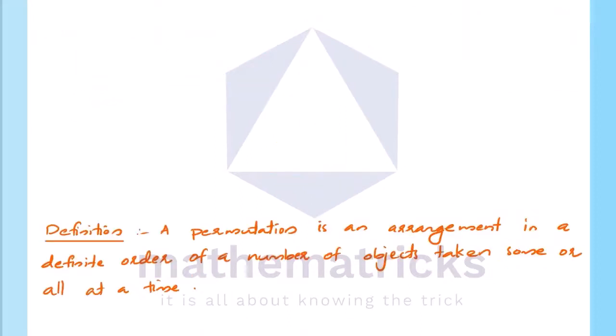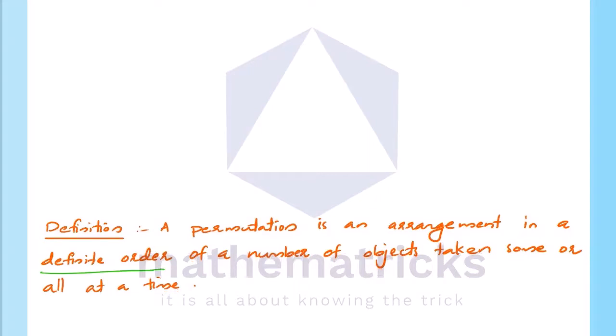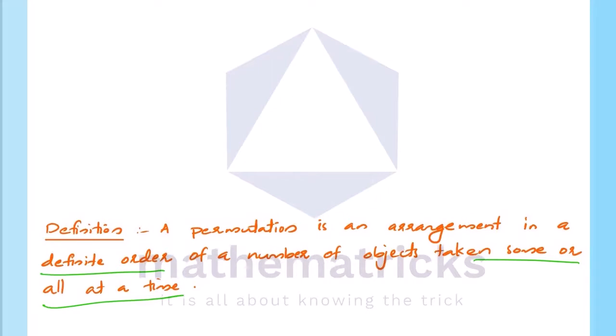By definition, a permutation is the arrangement in a definite order of a number of objects taken some or all at a time. It is the arrangement of objects — letters or labels.